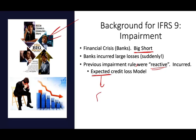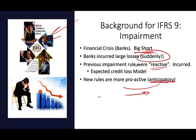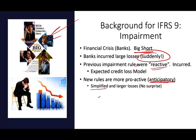Notice the word 'expected' — expected means future. Now we have to look into the future and try to anticipate what our losses are going to be, so we don't get caught again with large losses suddenly. That's the purpose of the expected credit loss model, which is basically part of IFRS 9 impairment. The new rules are more proactive, anticipatory. You have to guess, you have to estimate. They are simplified, but applying them is a little bit more challenging. We want to avoid large losses — no surprises.